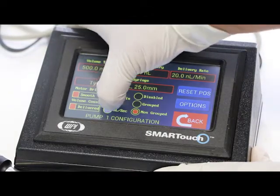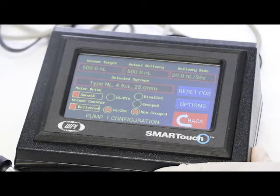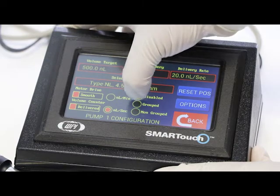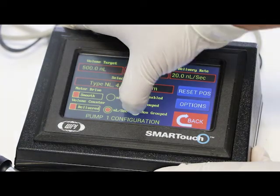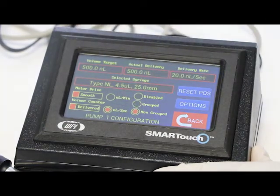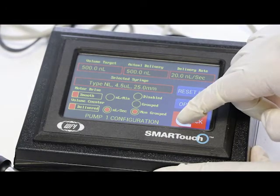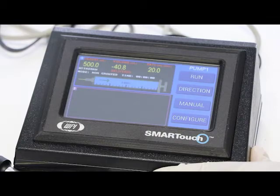You can just change it by just clicking on either button. And then if you have additional injectors, you can either group them together or have them non-grouped and they do individual rates and targets. Or you can just disable the whole function. And once you have the rate and the target that you want to inject, you can hit back and you're ready to inject.